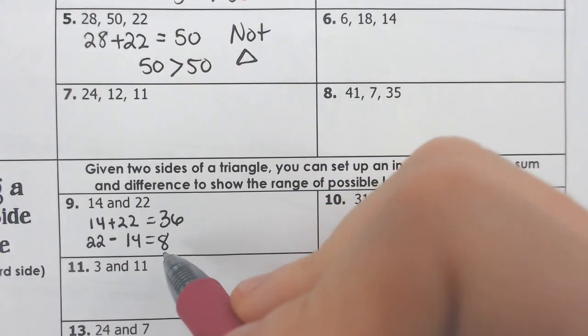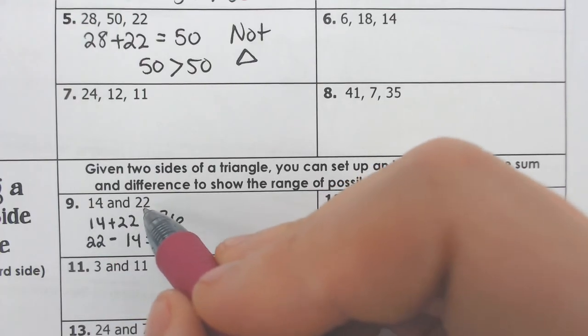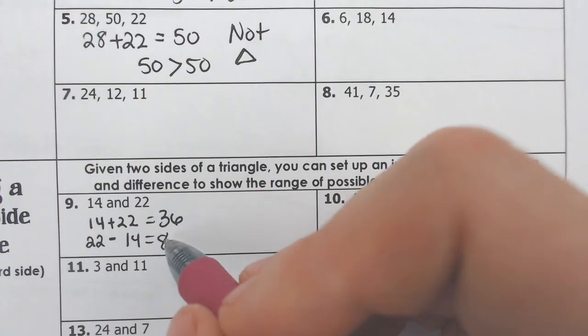So that means that 8 could be the smallest side, because 8 and 14, when you add those together, you get 22. So it can't be 8, it has to be slightly bigger than 8.